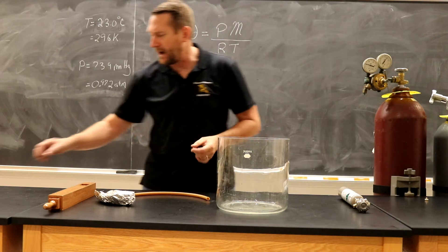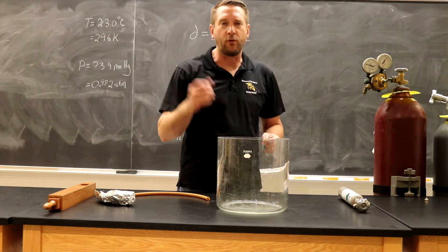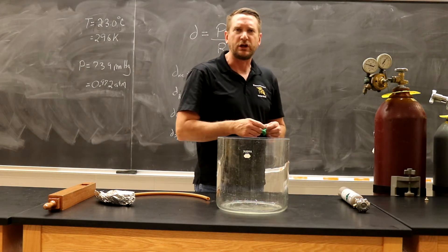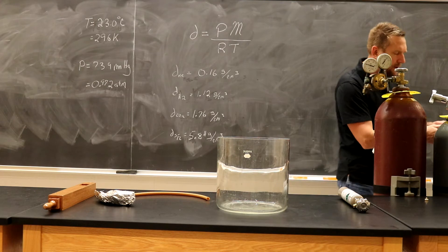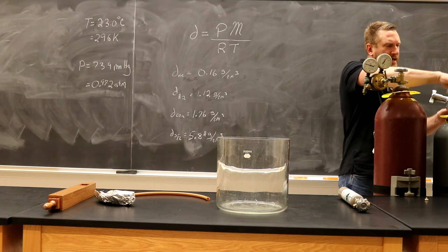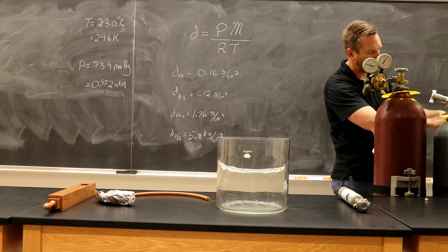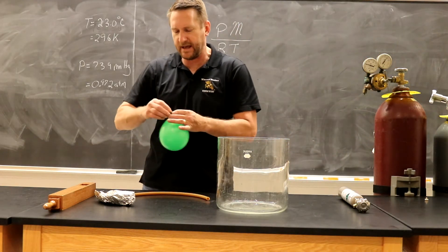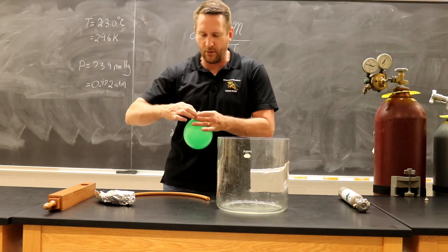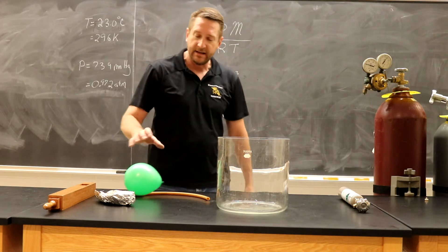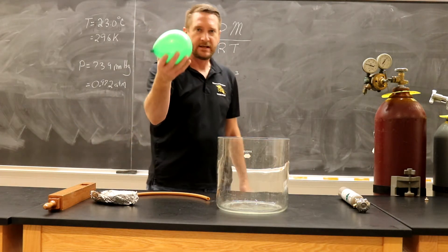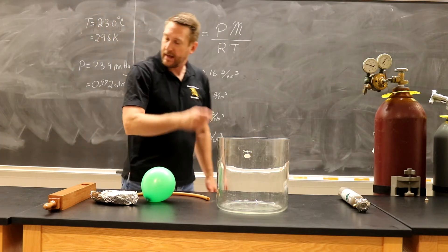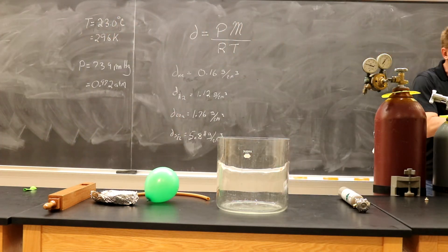We've seen the densities of carbon dioxide before, but I'm going to get some carbon dioxide in a balloon because we're going to use it in just a little bit. With my carbon dioxide — if I set it on the counter, it is not going to go anywhere because its density is much greater than that of air. In fact, it almost has weight to the balloon. I could put this on a balance and determine the mass of carbon dioxide in that balloon right now. Let me go ahead and get some nitrogen as well.